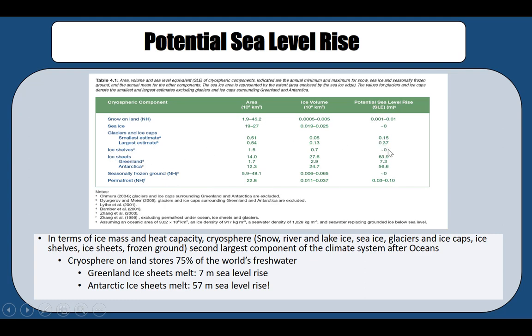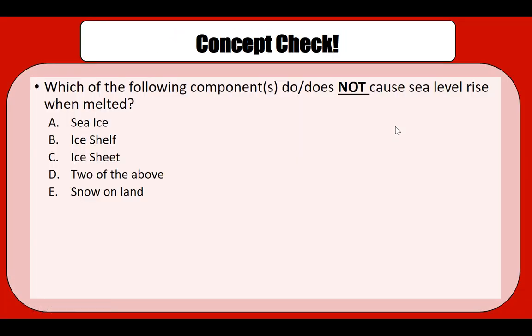For a quick concept check: which components do not cause sea level rise when melted? Sea ice, which floats on the ocean, and ice shelves will not lead to sea level rise when melted — so the answer is A and B, two of the above. That concludes our lecture, thank you.